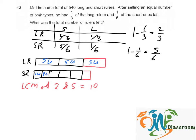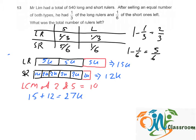As we can see, for the long rulers we have a total of fifteen small units. For short rulers, we have a total of two times six, which is twelve units. So the total is fifteen plus twelve, equals twenty-seven units. Twenty-seven units equals five hundred and forty. So one unit equals five hundred and forty divided by twenty-seven, which is twenty.